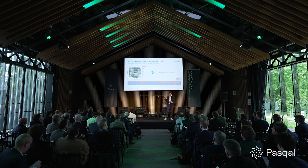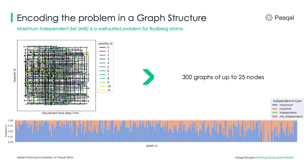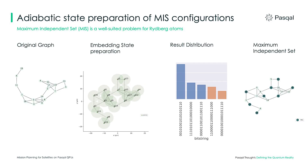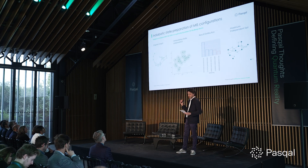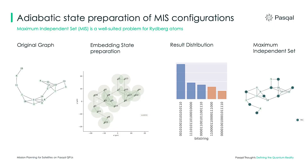Here are the results: with high probability we always end up finding the maximum independent set for each subgraph, and in the few cases where we could not, we end up with a large enough independent set that still leads to a feasible solution. For a given graph, we start with the original subgraph, compute a good embedding on our quantum register, run our MIS solver to get a set of candidate MIS solutions from measuring our system, pick the best one, and transpose it back to our original graph.